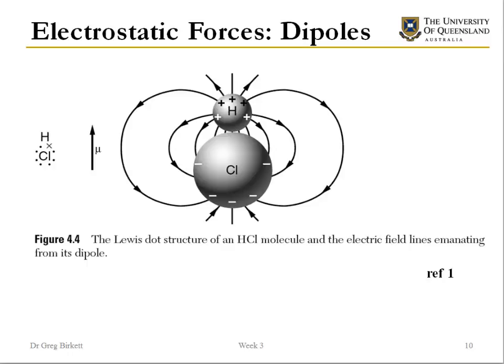Instead of having a simple point charge, molecules can have distributed charges. When these don't even out — for example, more negative charges at one end and more positive charges at the other — we get a net dipole. In HCl, chlorine is more electronegative than hydrogen, so the molecule has a dipole, and the partial charges interact with each other in a manner similar to point charges.